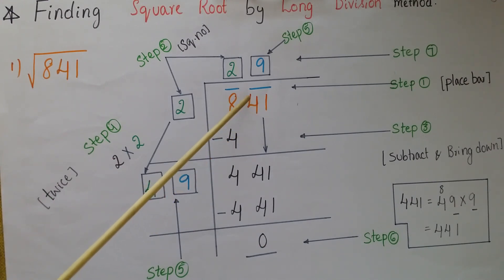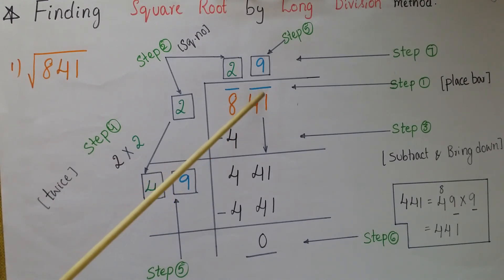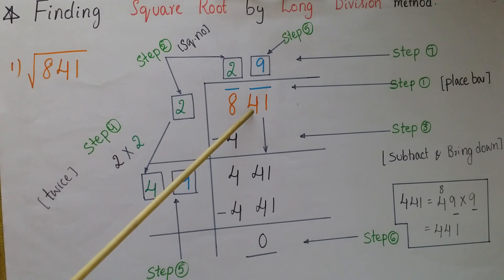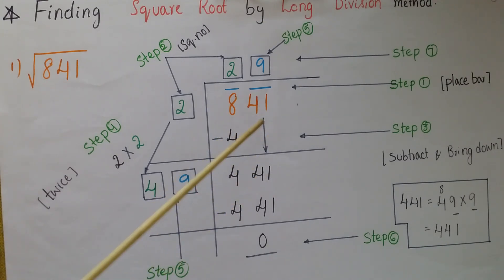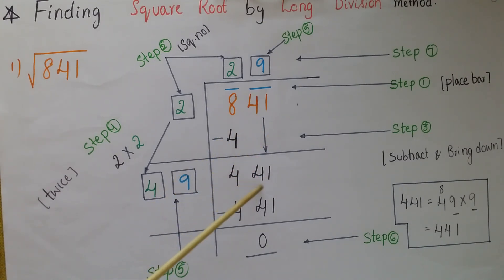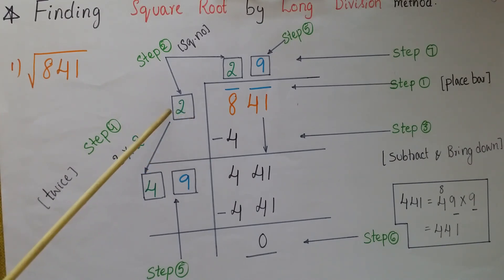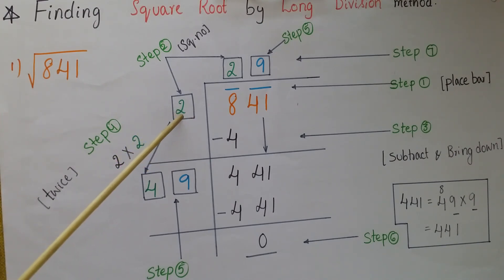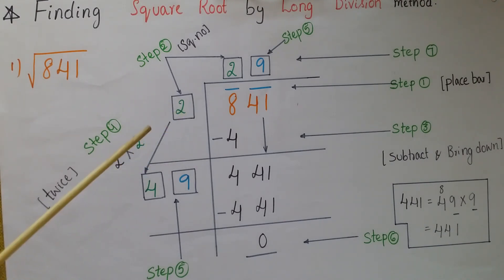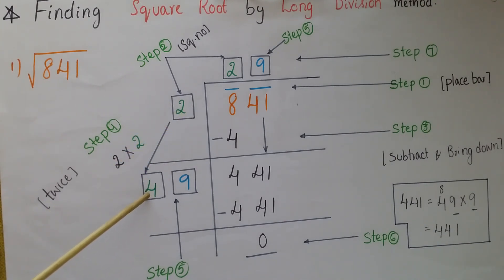Next, bring down the digits from the next bar, which is 41, making the number 441. In the next step, double the current quotient digit. There is only one digit, 2, so double it: 2×2 = 4. Write 4 here as the new divisor base.